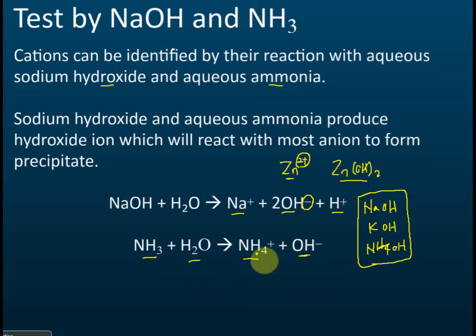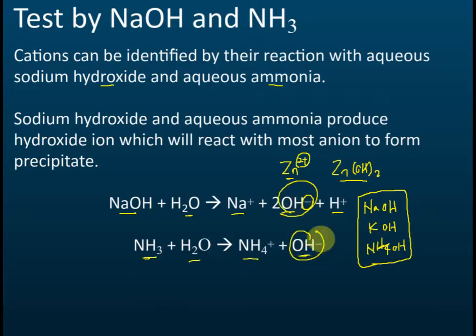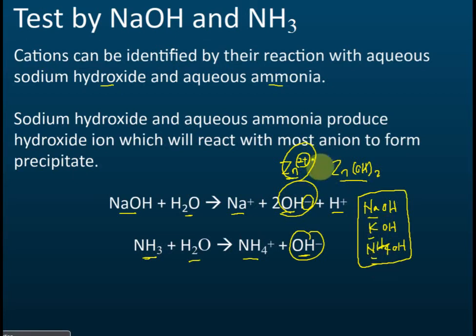So that's the first thing you need to know: sodium hydroxide and aqueous ammonia solutions form hydroxide ions in water. These hydroxide ions react with the positive ions, and — except for sodium, potassium, and ammonium — they will form a precipitate. The color of the precipitate depends on the color of the positive ions.